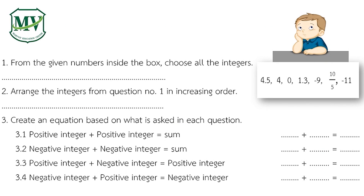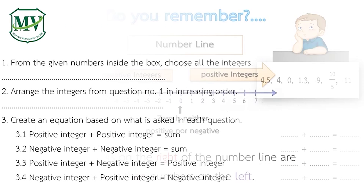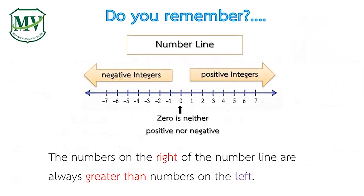Let's answer the following exercises. Do you remember the number line? It consists of negative integers, zero, and positive integers. The numbers on the right of the number line are always greater than the numbers on the left.